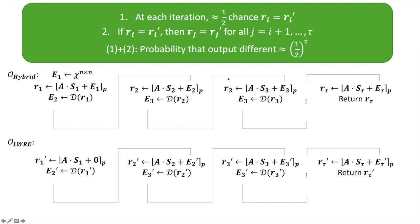We set the modulus Q to be just large enough so that this probability is roughly one half. Then at each iteration of the chain in both the hybrid and LWRE distributions, the probability that the seeds Ri used to derive the noise matrices are equal is one half.